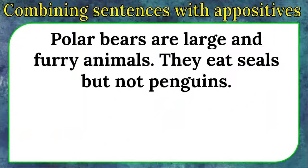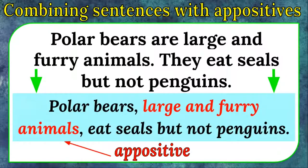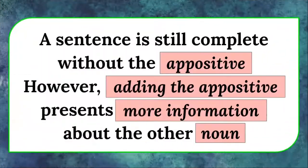Instead of "Polar bears are large and furry animals. They eat seals but not penguins," we can say: "Polar bears, large and furry animals, eat seals but not penguins." Remember, a sentence is still complete without the appositive. However, adding the appositive presents more information about the other noun.